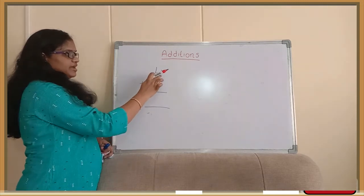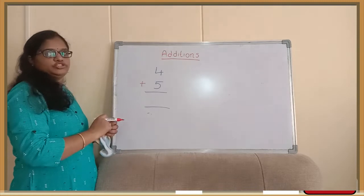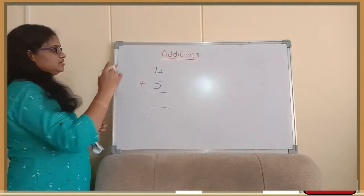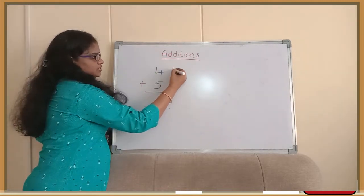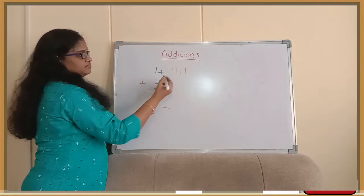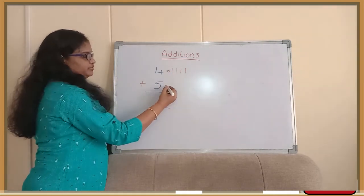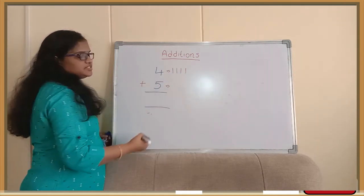Suppose if I am having 4 chocolates and 5 chocolates. If I am adding total chocolates, how many will it be? So let's count. 1, 2, 3 and 4. This is a very simple method for adding single digit numbers.